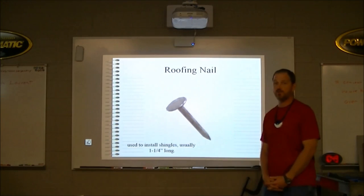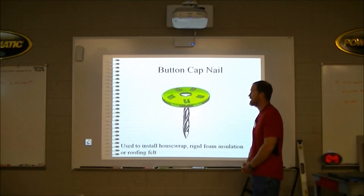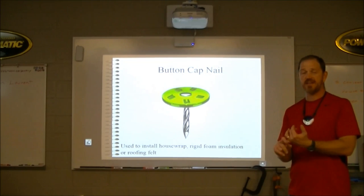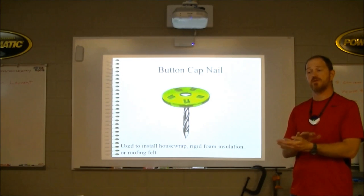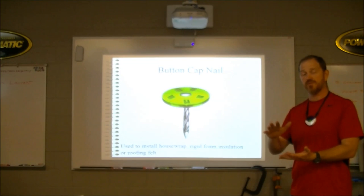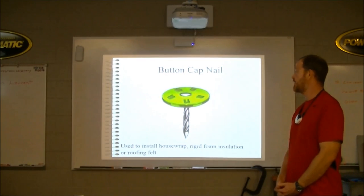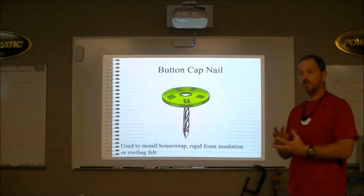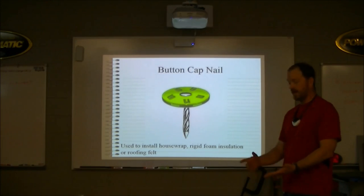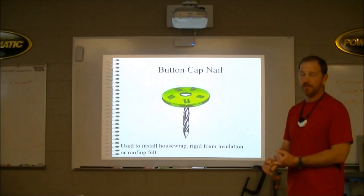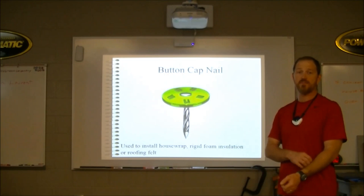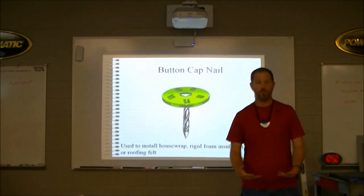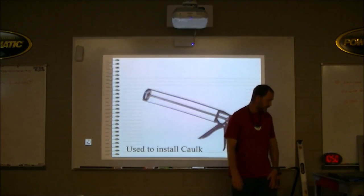Roofing nails are usually an inch and a quarter long and are used to install shingles. A button cap nail has a little plastic ring on it and is commonly used to attach roofing felt — the barrier that goes between the plywood or OSB and the shingles to keep the building dry. It's also used to install house wrap, which is a vapor barrier that helps keep the house warm in the wintertime.